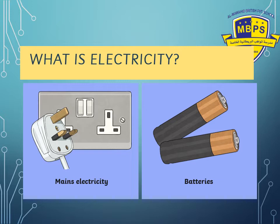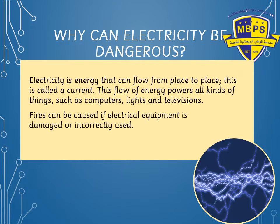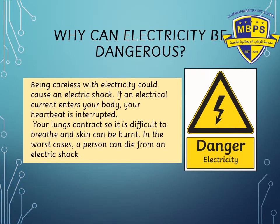Why can electricity be dangerous? Because it's a form of energy that flows from place to place and powers all kinds of appliances. If appliances are not checked regularly or not connected properly, there are chances of fires, electrical shocks, and short circuits. We have to be safe around electricity.